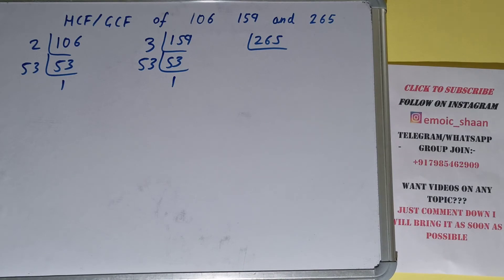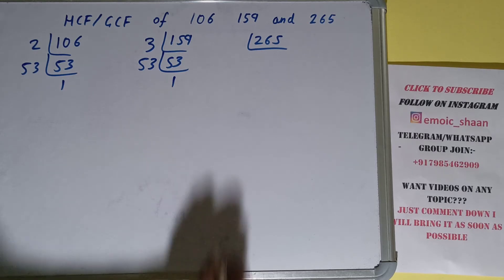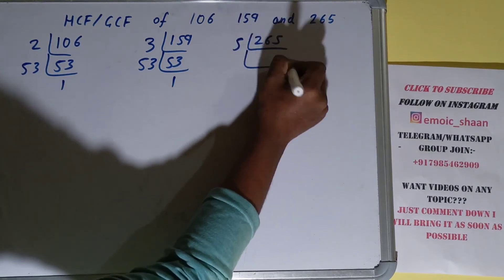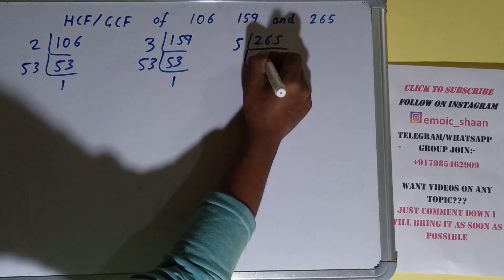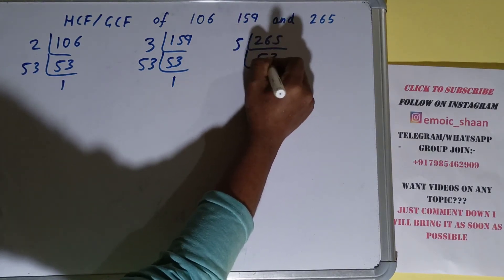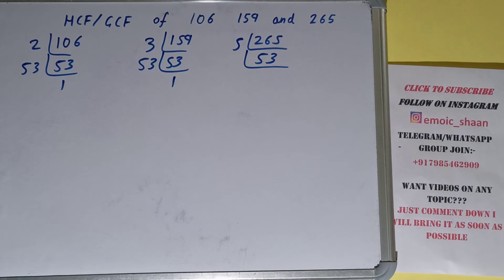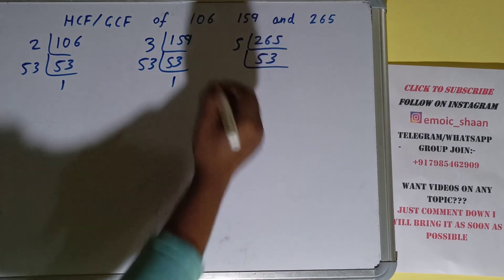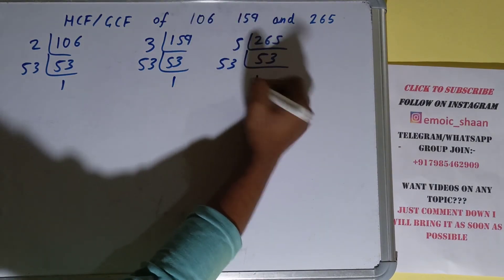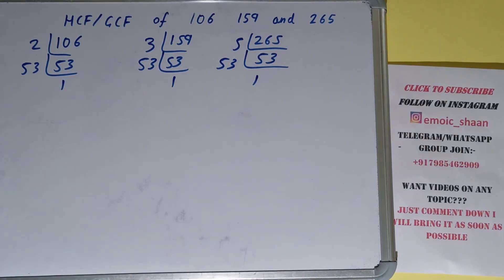Now we need to do the same with the number 265. Is 265 divisible by 2? No. Is it divisible by 3? No. So we check with the next lowest prime number, which is 5. Is it divisible by 5? Yes it is, and we're left with 53. Now 53 is a prime number, so it is only divisible by itself, and we're left with 1. We are done with 265.